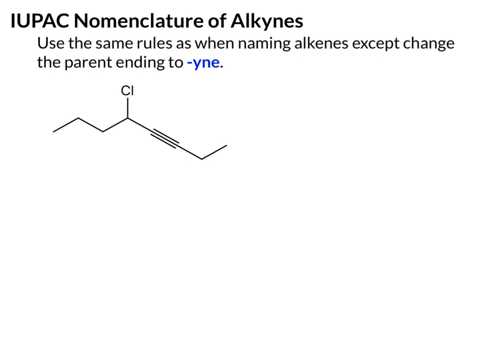So just like alkenes, you'll find your longest carbon chain that contains both carbons of the alkyne. In this case, it's just our carbon chain here. Next, we'll number this chain, and we'll start at the end closest to the alkyne — so that's going to be the right side. We have eight carbons. Eight carbons comes from octane, but instead of the A-N-E ending, we use the Y-N-E ending, so this will become octyne.